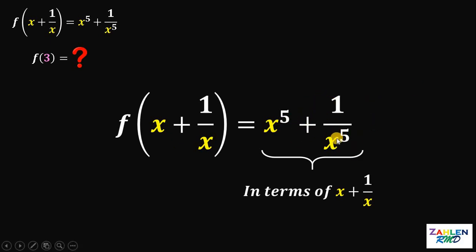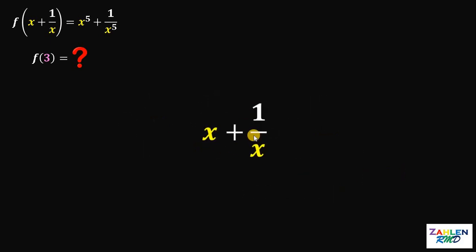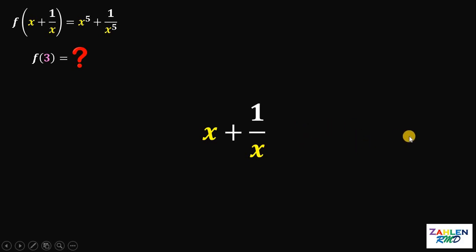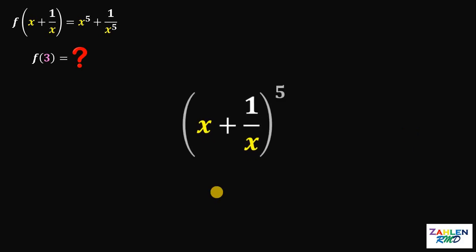Our goal is to rewrite x to the fifth power plus 1 over x to the fifth power in terms of (x + 1/x). So let's start with (x + 1/x). To get x to the fifth power plus 1 over x to the fifth power, we need to raise this expression to the fifth power.